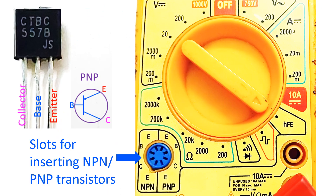The three leads of the transistor are known as collector, base, and emitter. The base is almost analogous to the control grid in the vacuum tubes of yesteryears. Current gain or amplification occurs in transistors between the base and collector currents with a common emitter configuration.